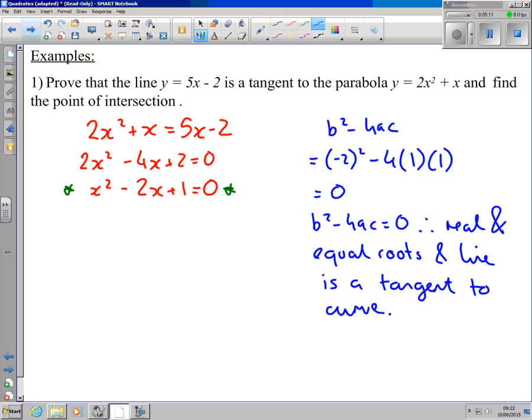Part two is now to find the point of intersection, which is just carrying on from there. This goes to (x - 1)(x - 1). Obviously if it's a tangent it should be real and equal roots, so repeated roots, the same bracket. x = 1, x = 1. Then going back up, I find the y coordinate. y is going to equal 5x - 2, so if x is 1, y is 5(1) - 2, so y is 3. So that's the point of intersection (1, 3).